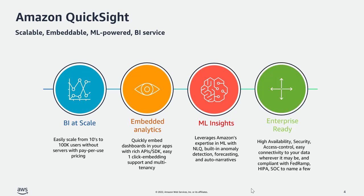Last but not least, Amazon QuickSight is enterprise ready. It has high availability, scalability, and some compliances already taken care of so that you don't have to worry. Amazon QuickSight supports a variety of data sources, both native to AWS and external. So with Amazon QuickSight you get a one-stop shop where you can get started with BI very quickly, pay for what you use, get deep ML insights, and it is enterprise ready.